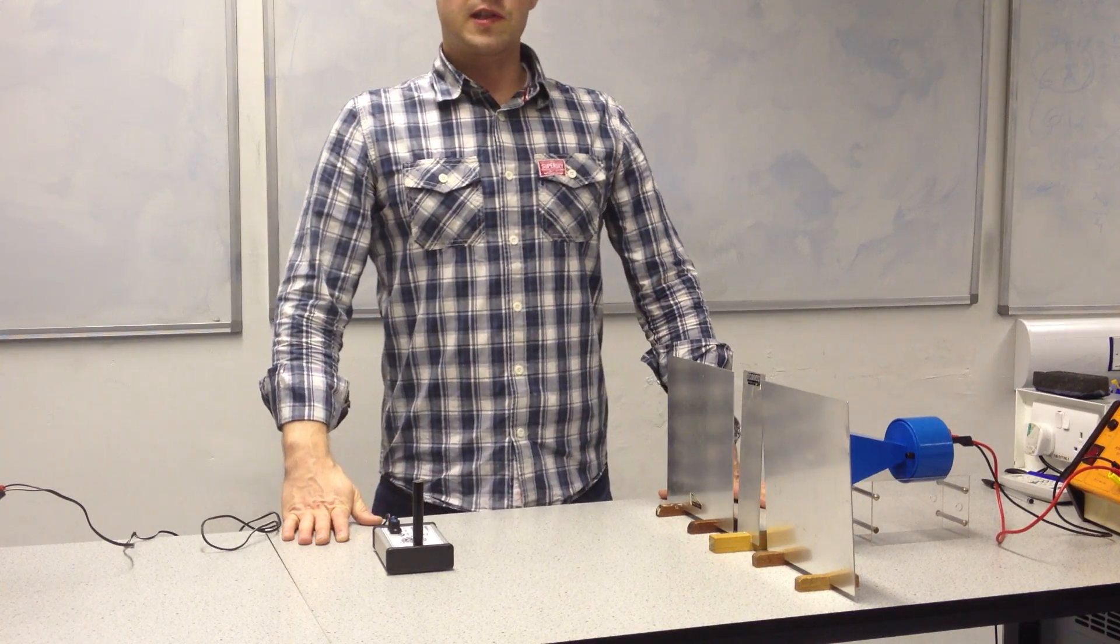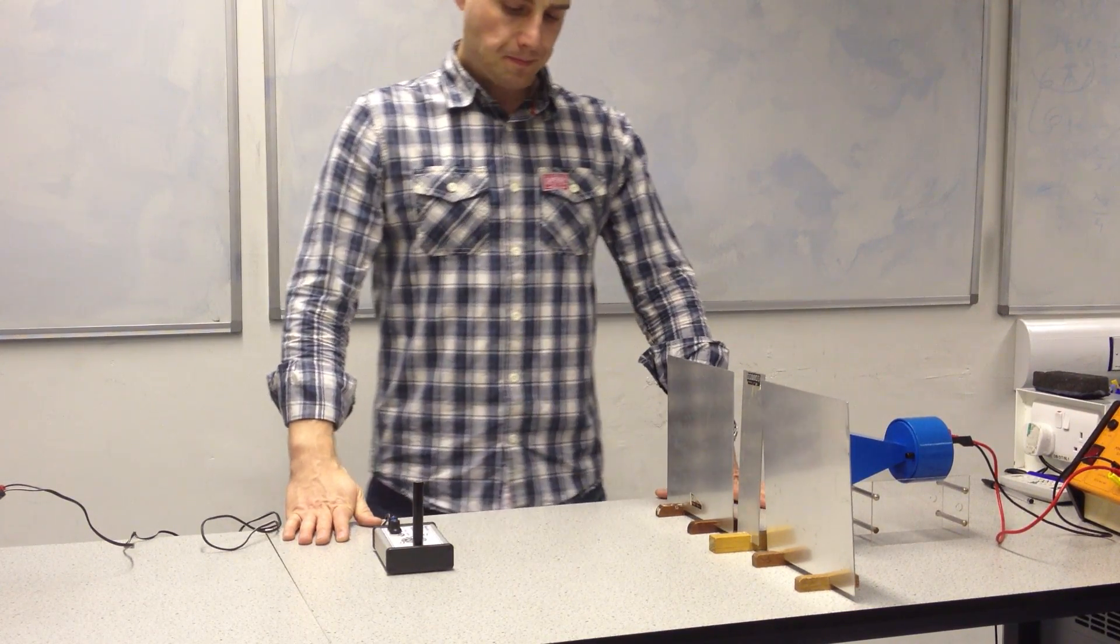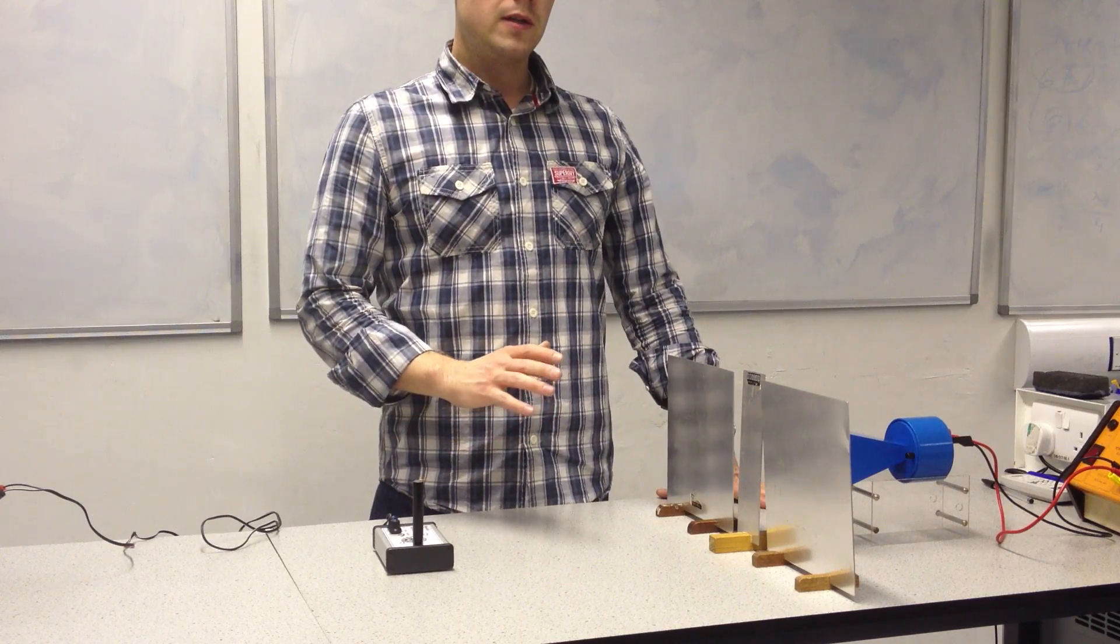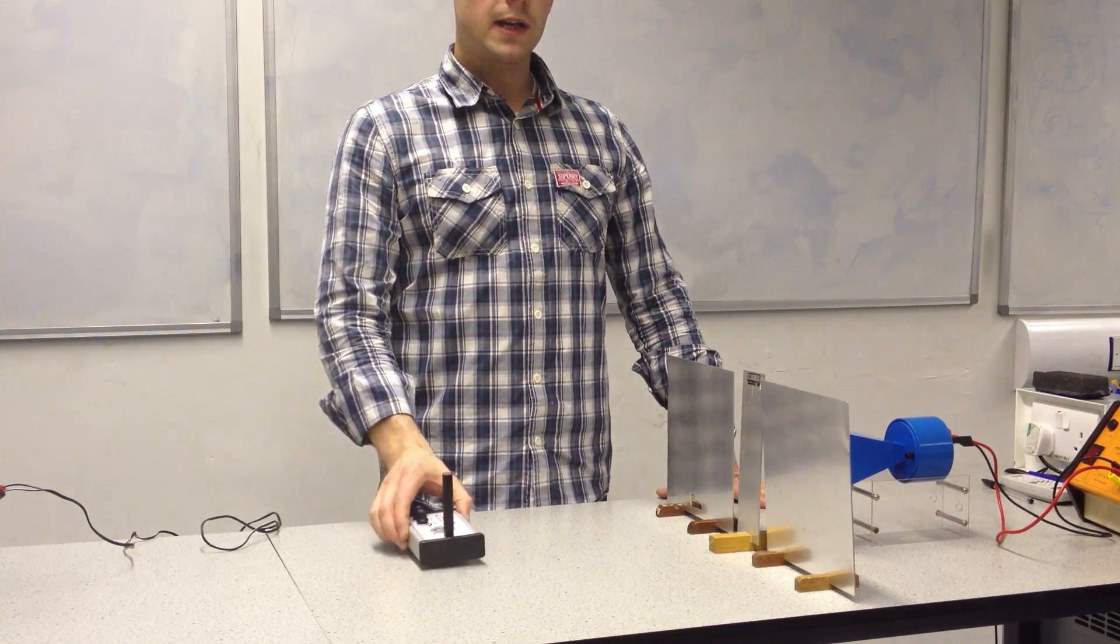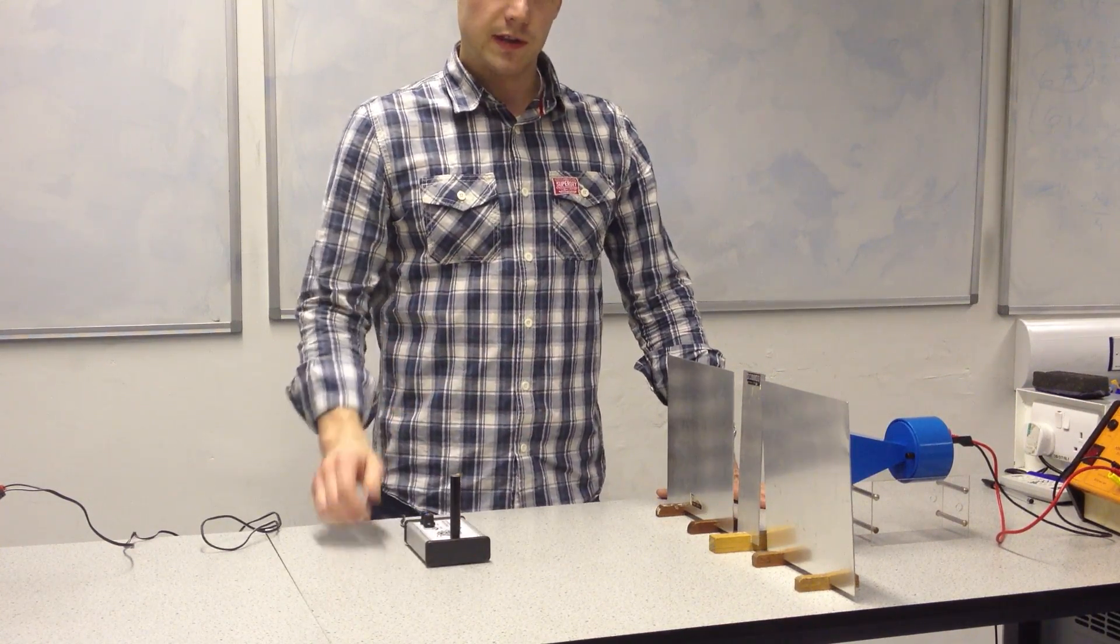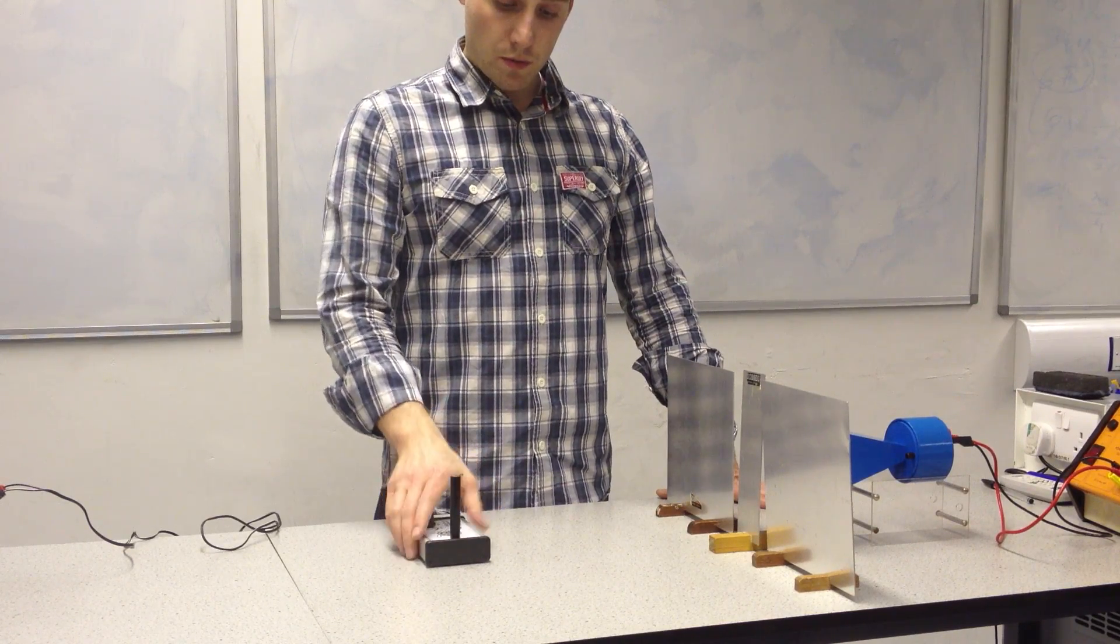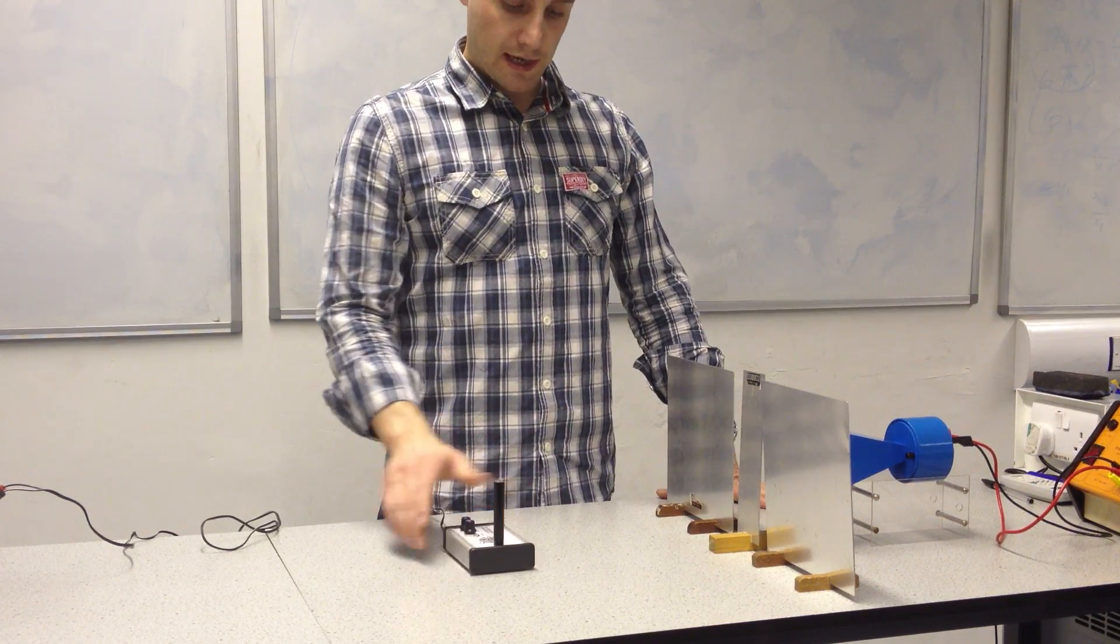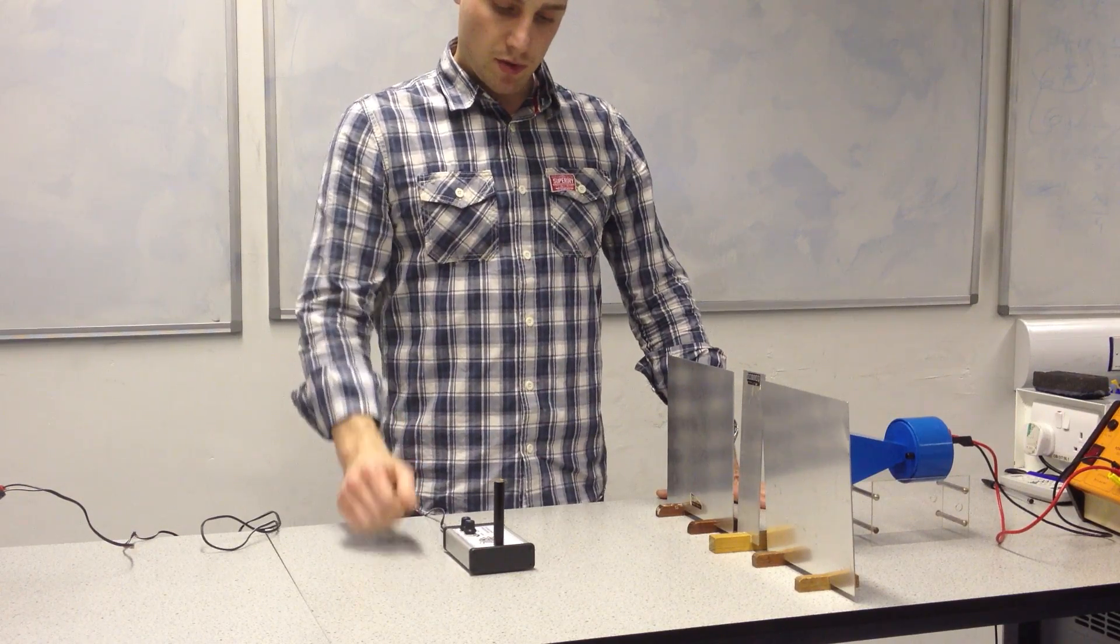This is the two-source interference experiment using microwaves. Microwaves can't be detected directly by us, by any of our five senses, so I will use a microwave probe to detect the strength of the microwave signal at any given point.